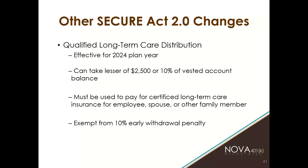Another distribution option is the qualified long-term care distribution, where a participant can take the lesser of $2,500 or 10% of their vested account balance. This distribution is used to pay for certified long-term care insurance for the employee, their spouse, or another immediate family member. There is no guidance yet on whether the plan sponsor must collect evidence of how the money is used. This distribution is also exempt from the 10% early withdrawal penalty if the participant is not yet age 59 and a half. At this point, there is no mechanism allowing repayment of this distribution.